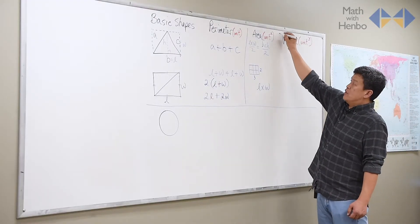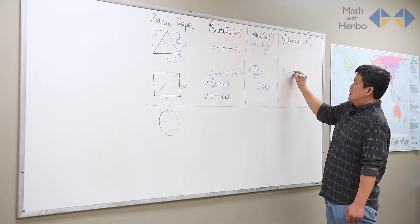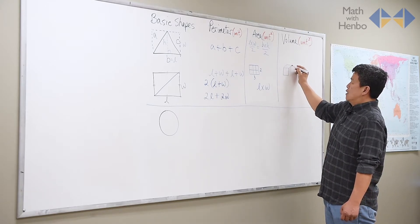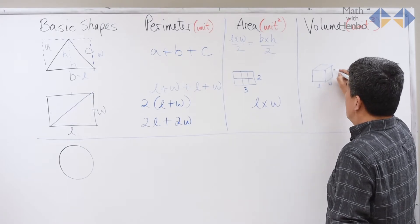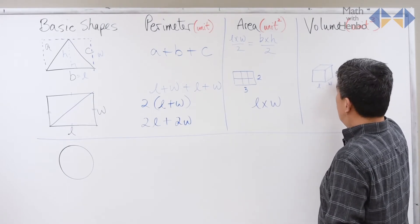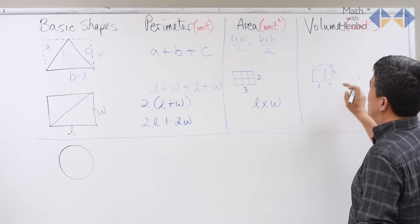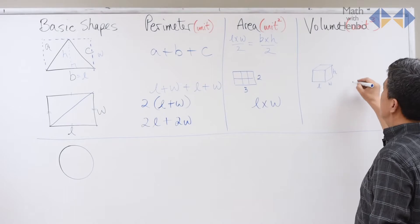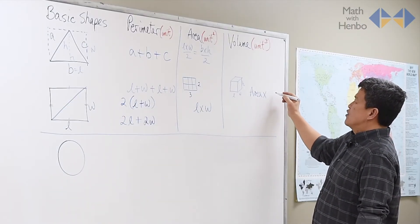For the volume, though, don't get confused. All we have to do is if we have a box, just know length times width is already there. We know the formula: area. And then just got to incorporate the third measurement. So here, the formula for our volume is always area times the third dimension.